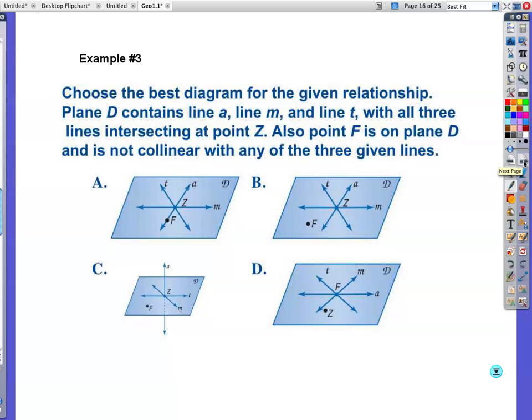Example number three, choose the best diagram for the given relationship. Okay, there's a lot of words up here. Let's break it down. It says plane D contains line A, line M, and line T. So if I notice here, everything has plane B, so that part we're good with. They have to have lines A, M, and T.